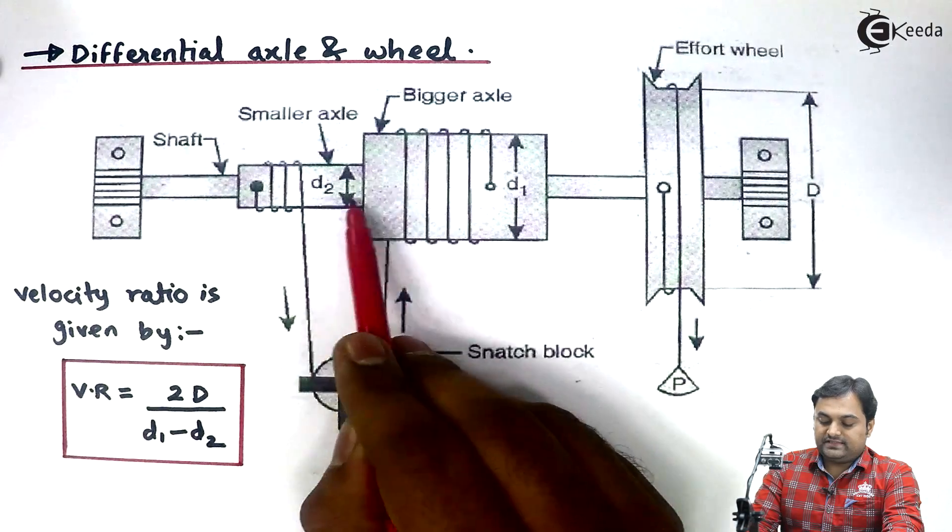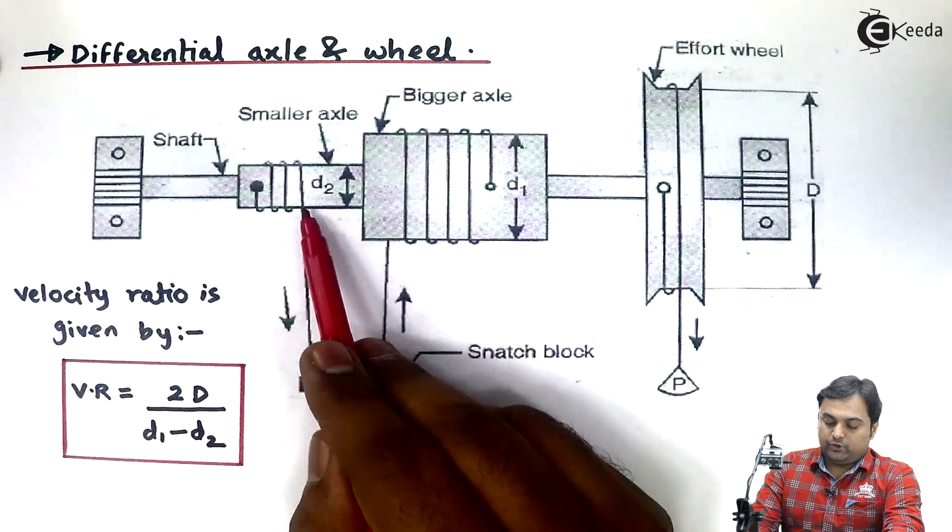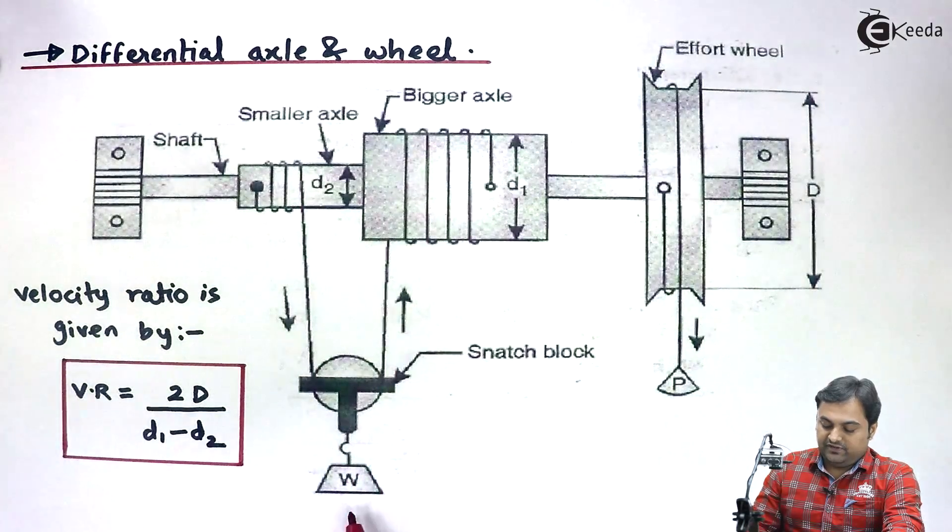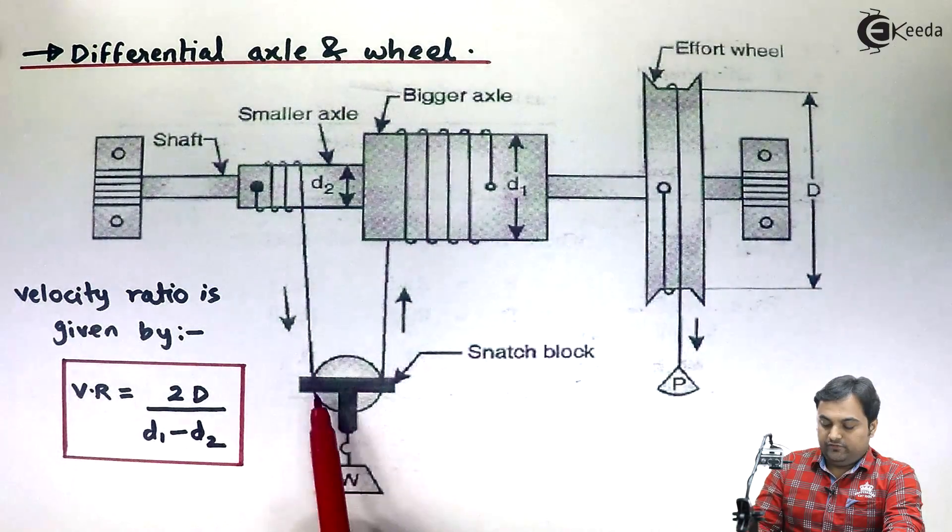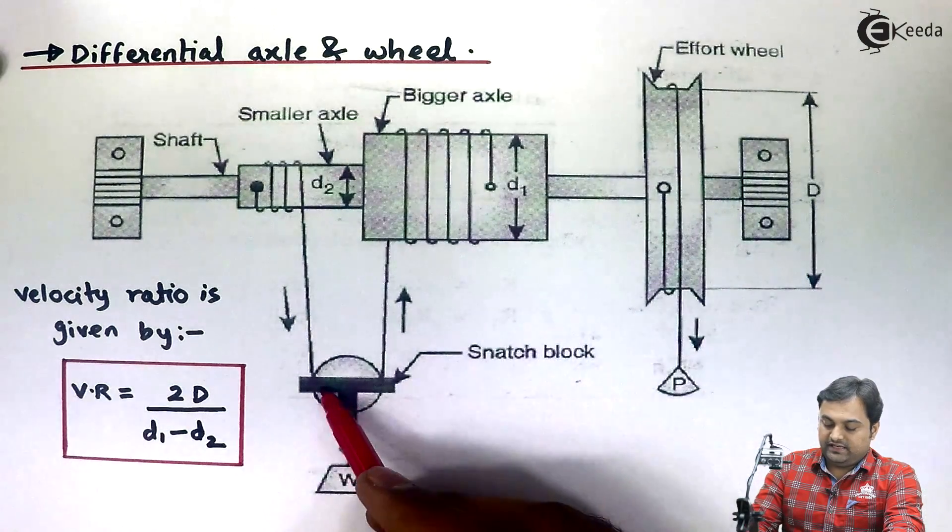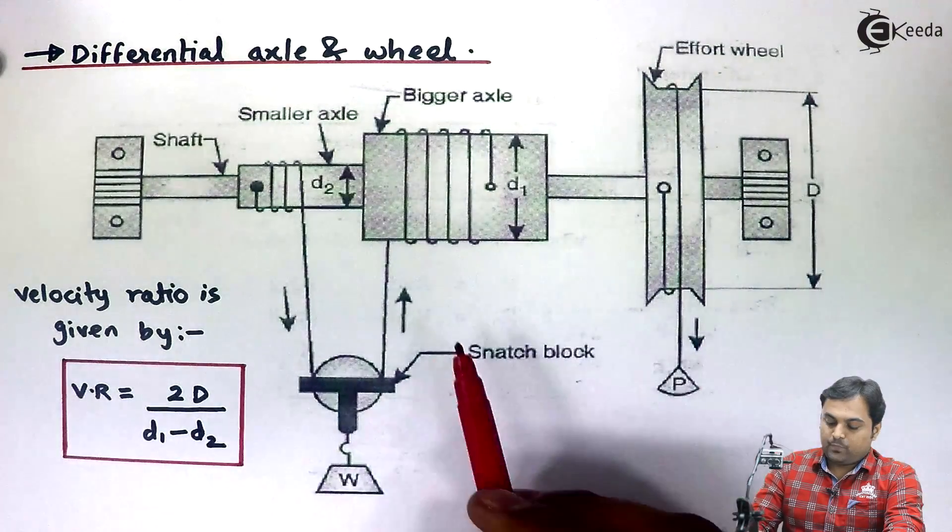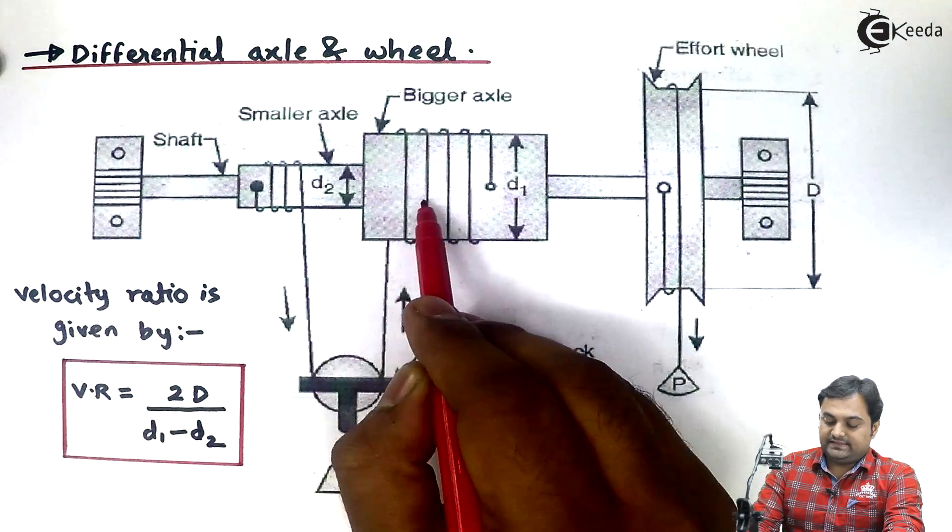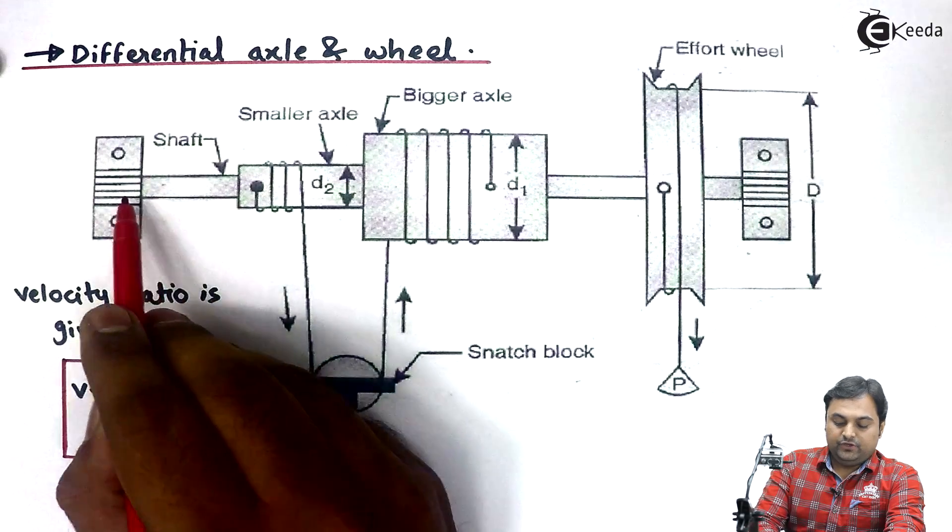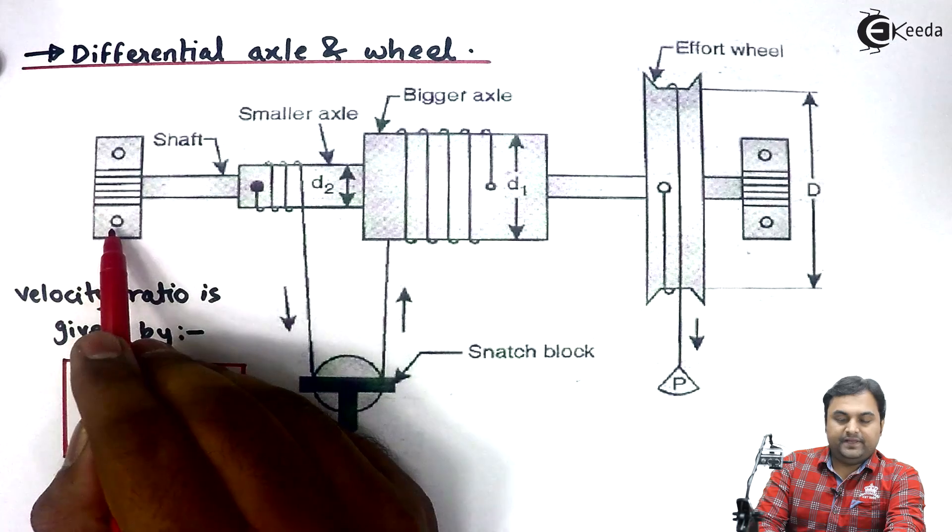On both the axles, that is bigger and smaller axle, string is wound or the rope is wound to which we are attaching the load with the help of this snatch block. The snatch block is like a hook which connects the load to be lifted. These two axles are connected to a shaft which is supported in bearings. These ends are called as bearings.